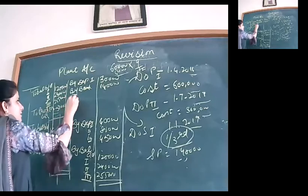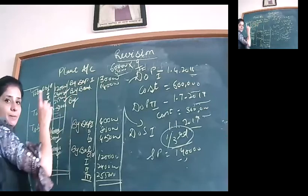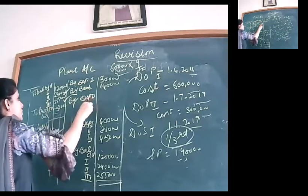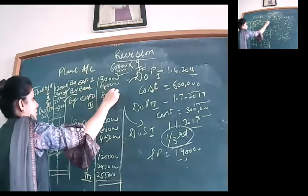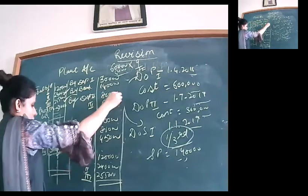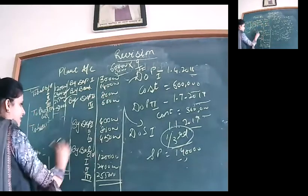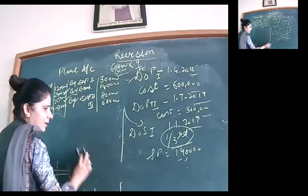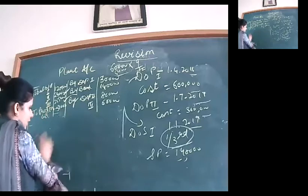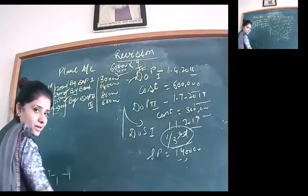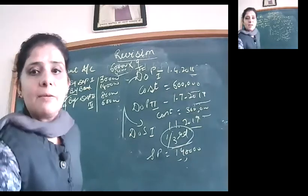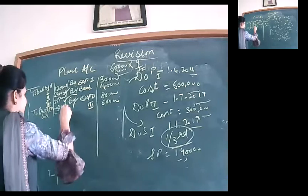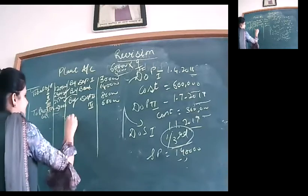At year-end 31st March, charge depreciation on the remaining assets: By Depreciation 2 — ₹80,000 on 2/3 of Plant 1; By Depreciation 3 — ₹60,000 on Plant 2 (full year now, since Plant 2 is with me for the whole third year at 20% on ₹3 lakh). Then calculate the closing balancing figures.